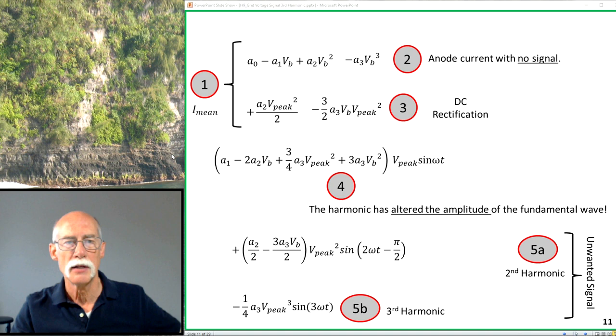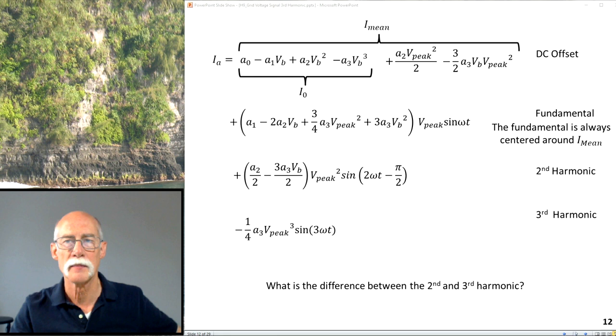So here's the five things I showed in the second order harmonic video. One, I mean, this is I sub zero. Anode current with no signal. This is now the DC rectification. The third order harmonic adds to the harmonic DC rectification. Here is now my first harmonic, or the fundamental. There's now some cube terms in there. Again, it's altered the amplitude. This subtracts these add. Does it really? Well, math says it does. Does it affect it much? We'll see. And then five. So I've got 5A, which is second order harmonic. 5B, which is the third order harmonic. These comprise the unwanted signal. The harmonic. Here's my DC offset. The first terms are I sub zero. The next terms are the rectification terms. So we're going to call that I mean. Fundamental, second, third.